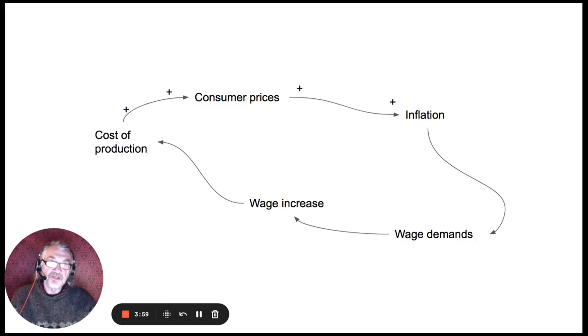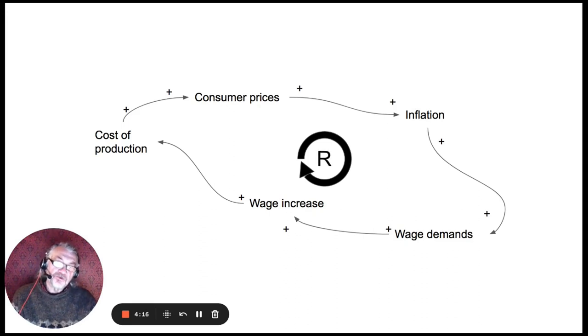So if we add the pluses there, we have a plus inflation, plus for wage demands, plus for wage increase, and finally plus for cost of production. This is a loop and we're drawing an R here because it's a reinforcing loop. So if we can identify loops, we might also affect places to start to intervene with mechanisms to stop these, which could be dangerous loops from carrying on.